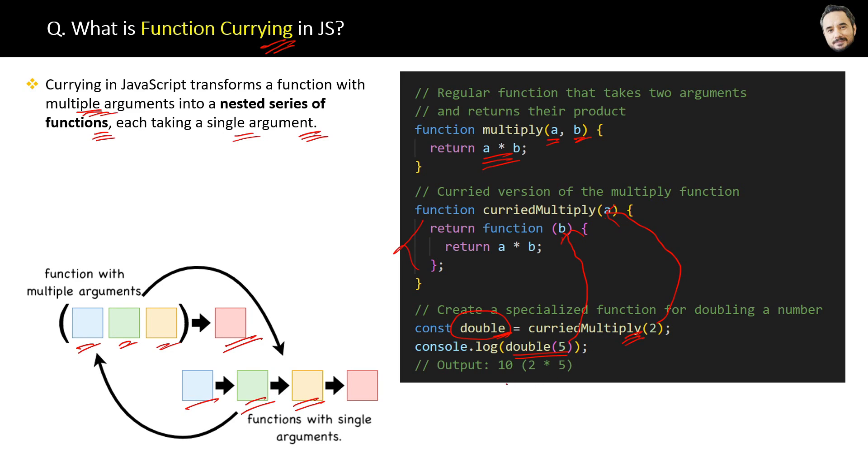And finally we are getting the multiplication of a and b. Now if you compare this with the definition, we have transformed a function with multiple arguments into a nested series of functions, each taking a single argument. Right?